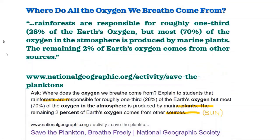Rainforests contribute only 28% to the earth's oxygen. At most about 70% is produced by marine plants called phytoplanktons. The remaining 2% of earth's oxygen supply comes from the photolysis of water vapor in the atmosphere by sunlight.